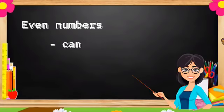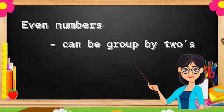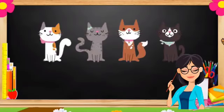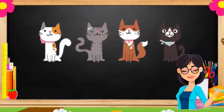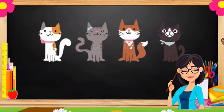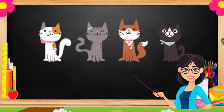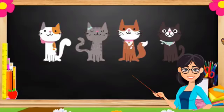Even numbers can be grouped by twos. Example: Look at the picture. I have here four cats. Take note that even numbers are grouped into two. All numbers that can be grouped into two are even numbers. Let us then group the four cats.